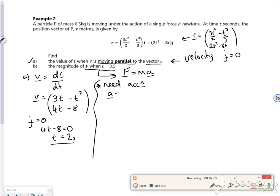So my acceleration is dv by dt. So if I differentiate my acceleration, so 3t minus t squared becomes 3 minus 2t. 4t minus 8 becomes 4 and that's my acceleration.